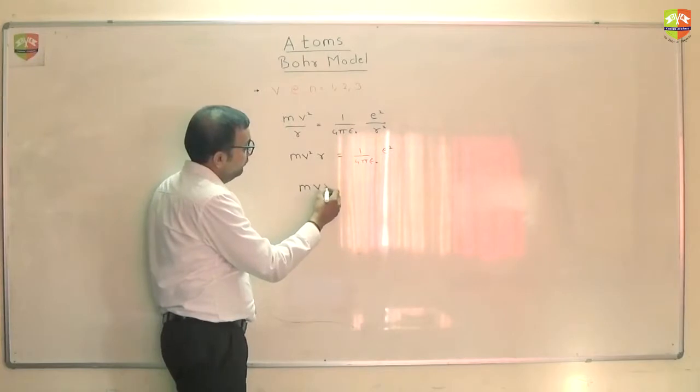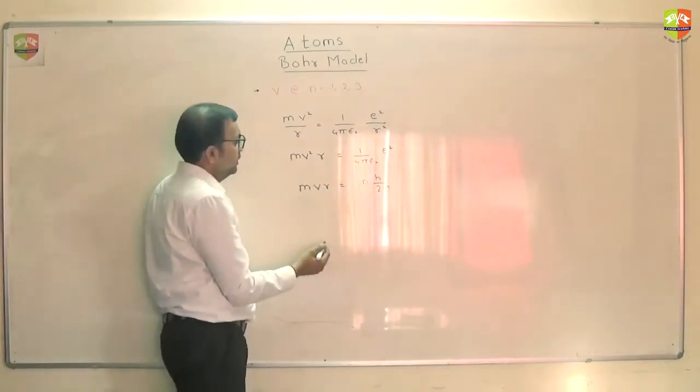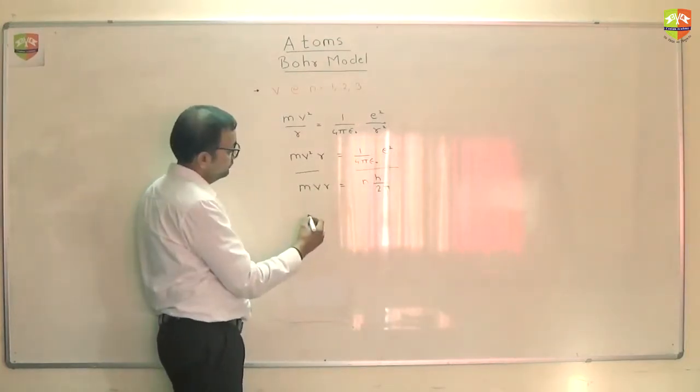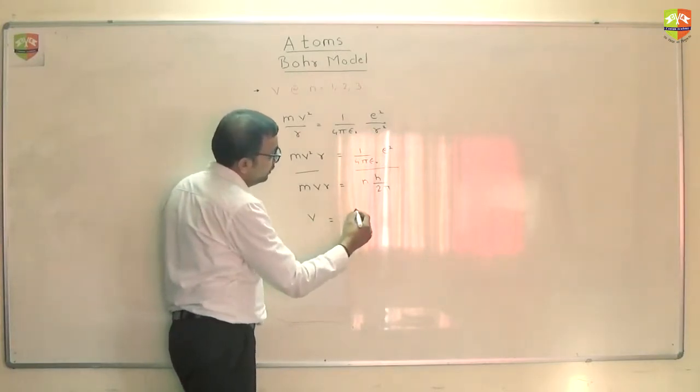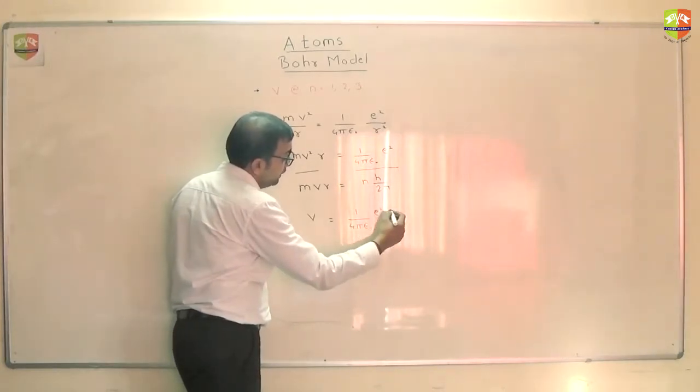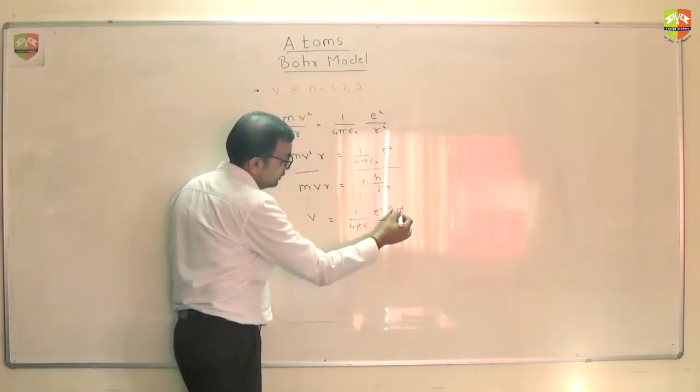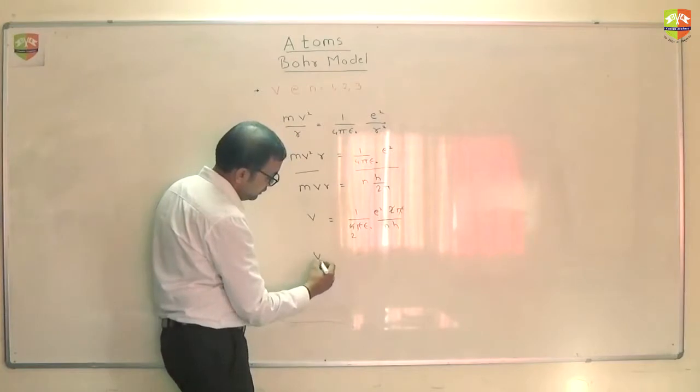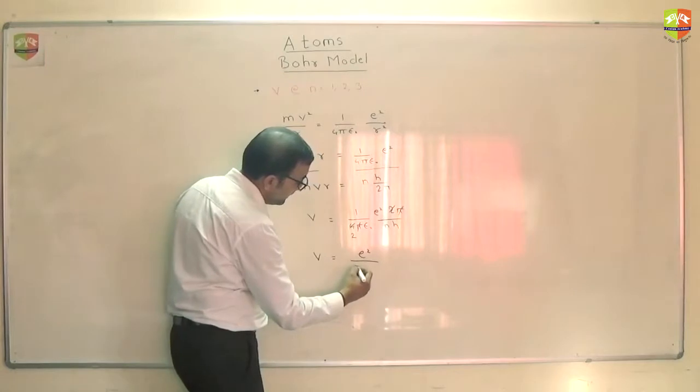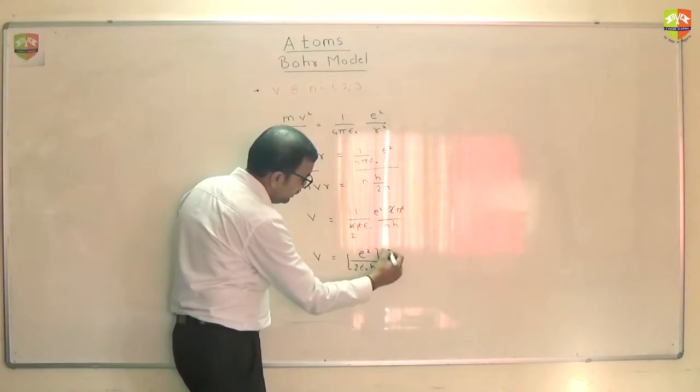And I also know that mvr is equal to nh by 2π. So if you want to eliminate r, you can just divide it. So v will come out to be 1 by 4π epsilon naught e² by 2π by nh. So v is equal to e² by 2 epsilon naught h into 1 by n.